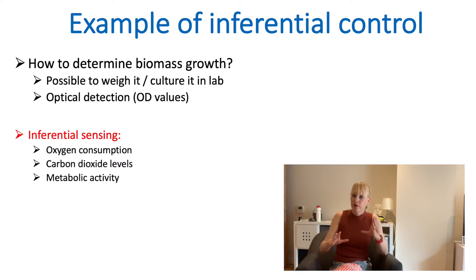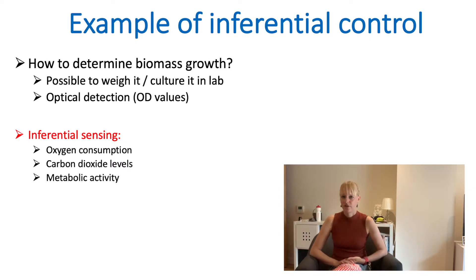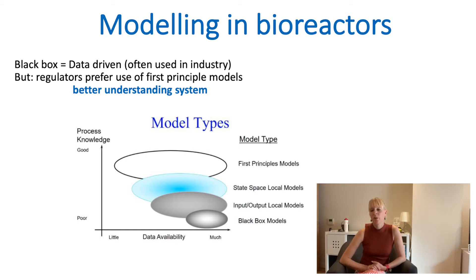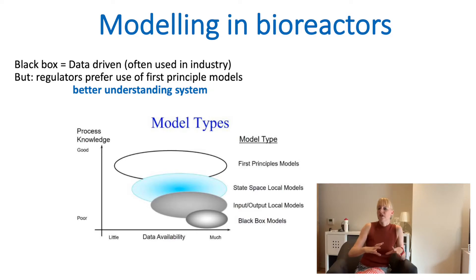There is software that can link these variables, so you can get around the use of in-situ sensors that are maybe not available or that don't work well because they foul easily, and use something easier to measure to control another variable. Modelling in bioreactors is a little bit different than what you're used to. In most other reactors you can use an empirical approach, but if you're working with pharmaceutical products that are used on people, you really need to understand the principles — it's much more important that you understand the fundamentals rather than using an empirical model.